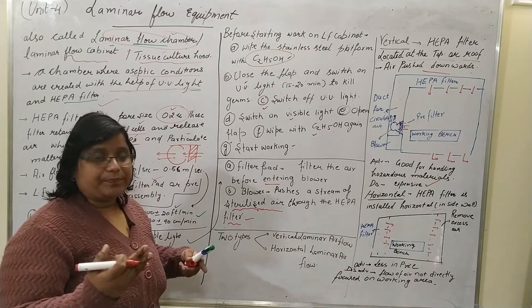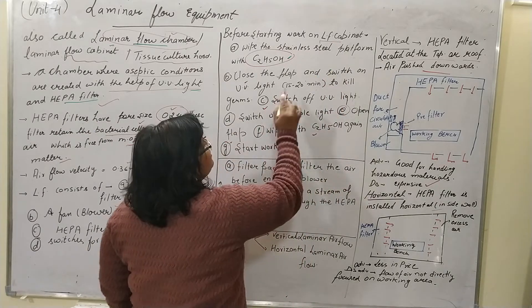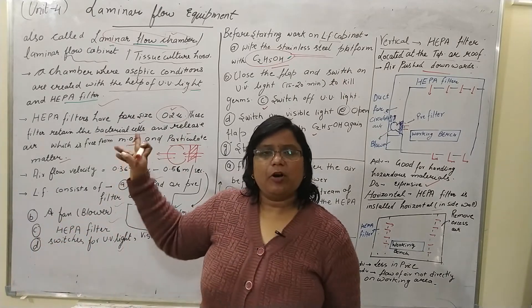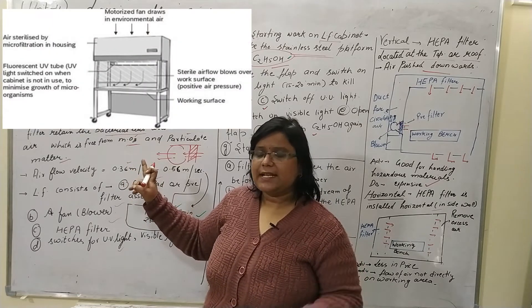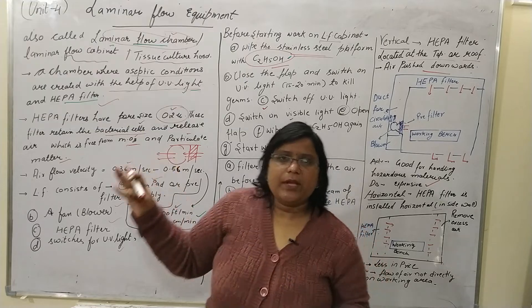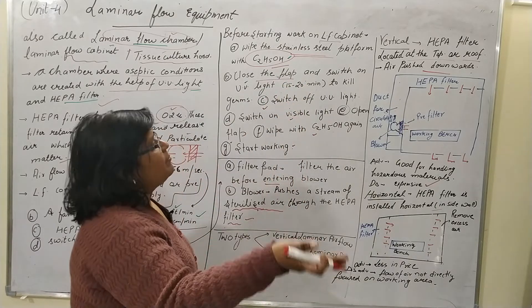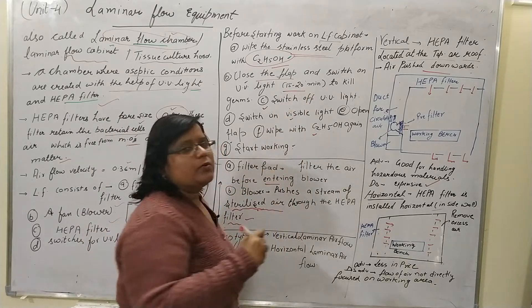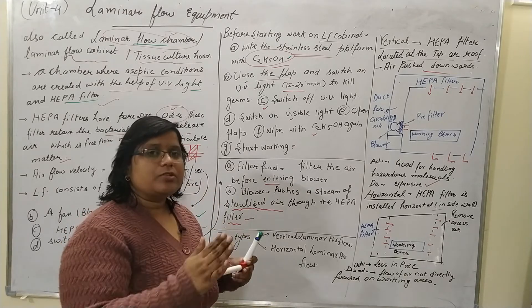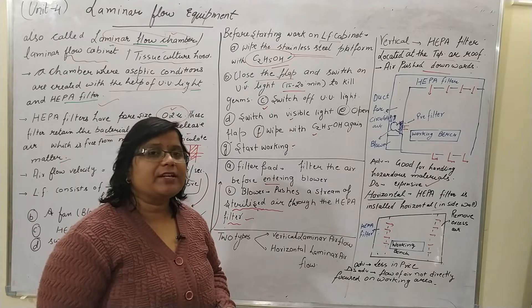Before starting work on the laminar airflow cabinet, first wipe the stainless steel platform with ethyl alcohol. You can see the diagram of the laminar airflow — it shows the stainless steel bench, HEPA filter, switches, and all components. After wiping, close the flap and switch on the UV light. The switch for UV light is located outside the chamber, and when you switch on the UV light, you should stay far away from the laminar airflow, because UV light is quite carcinogenic.